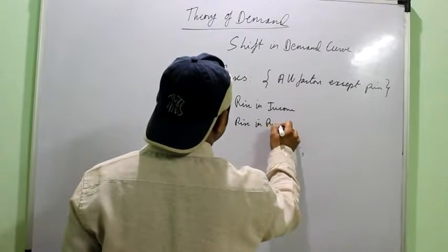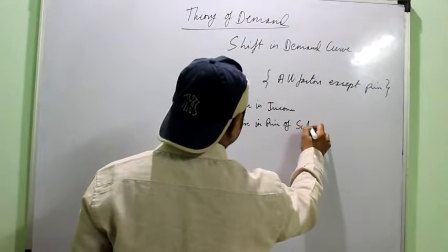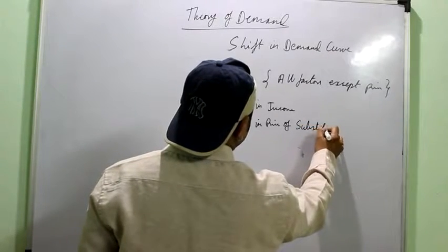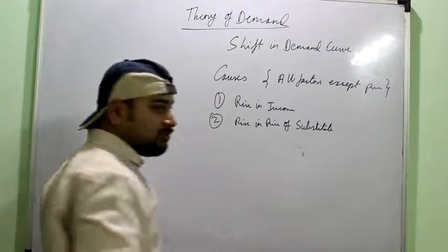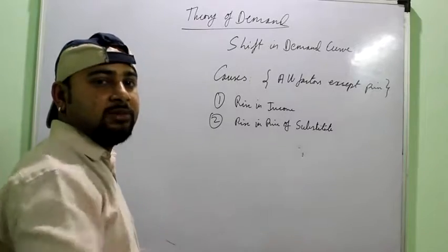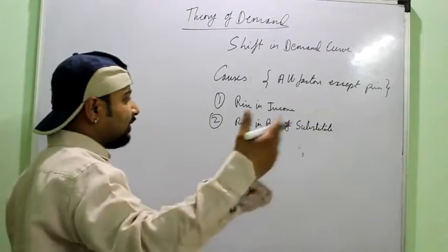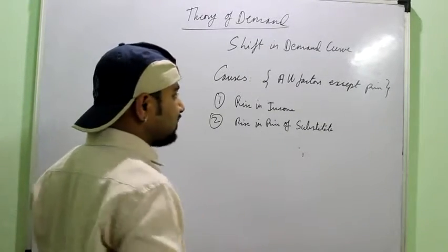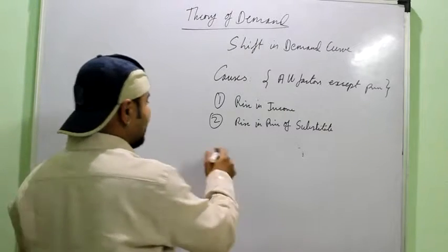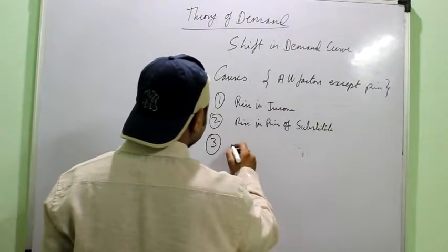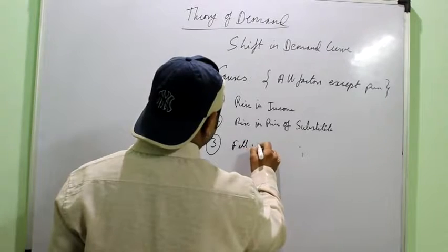Then rise in the price of substitute. Maybe the price of the substitute has increased, so he starts buying more at the same price. Like if coffee becomes more expensive, maybe more people start buying tea without the price of tea being changed.